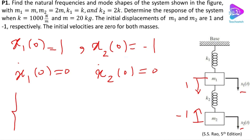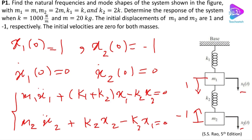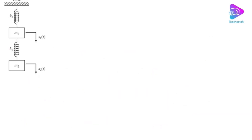As you may remember, we have the equations of motion: m1 x-double-dot-1 plus (k1 plus k2) times x1 minus k2 x2 equals 0 — this is the first equation. The second one is m2 x-double-dot-2 plus k2 x2 minus k2 x1 equals 0. I'll call these Equation 1, because I will refer back to them later.